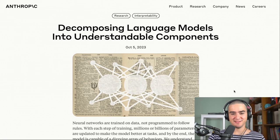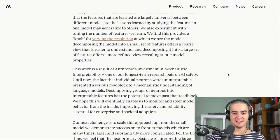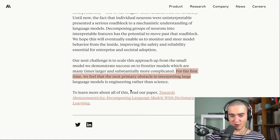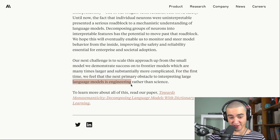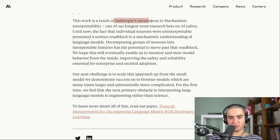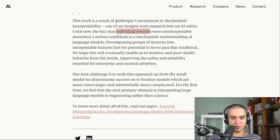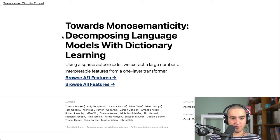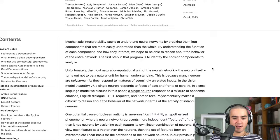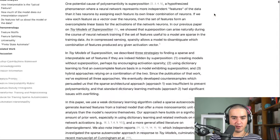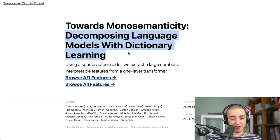So what happened is Anthropic released this new blog post saying decomposing language models into understandable components. And at the end they say, for the first time, we feel that the next primary obstacle to interpreting large language models is engineering rather than science. So basically, interpretability might be solved. Anthropic was investing in making interpretability for so long and they didn't have any clear results of managing to interpret individual neurons, right? This was a blog post, but they actually have an actual paper which is kind of the same format as this still. It's mostly like HTML paper. It's beautiful.